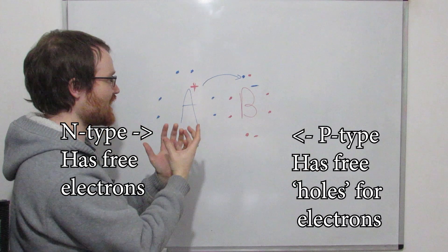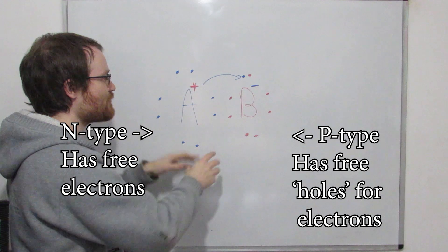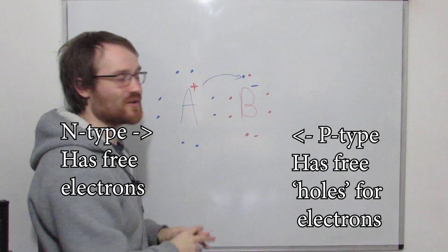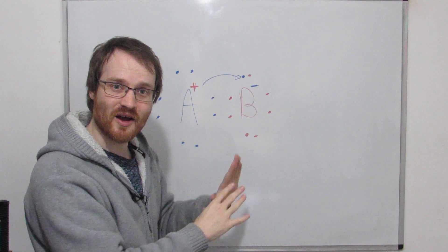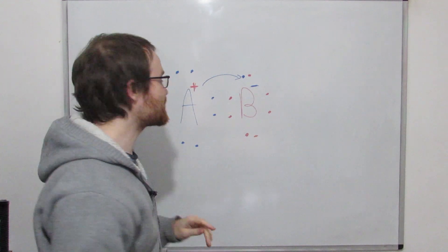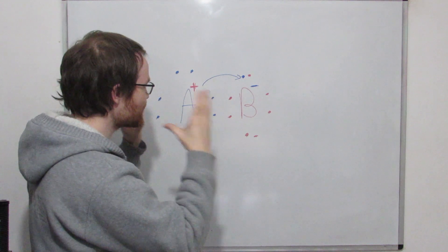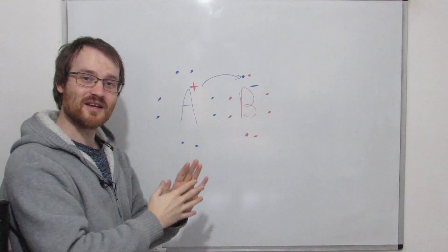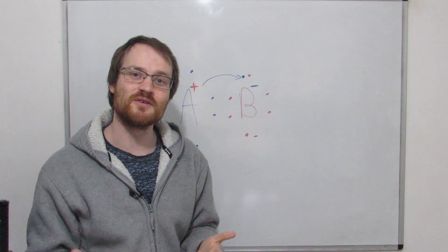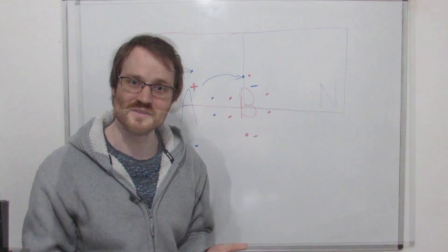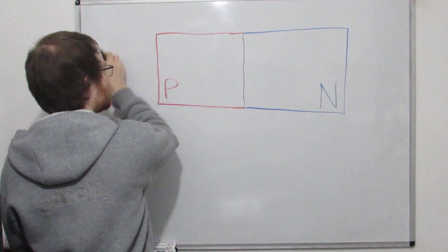So when I talk about holes I'm really talking about where electrons used to be, but you can think of them as a positively charged electron if you find it easier. So this is why we do this — we have the N-type and the P-type, and when we put them together we make a load of these positive and negative ions, and it's this chemistry that makes diodes possible.